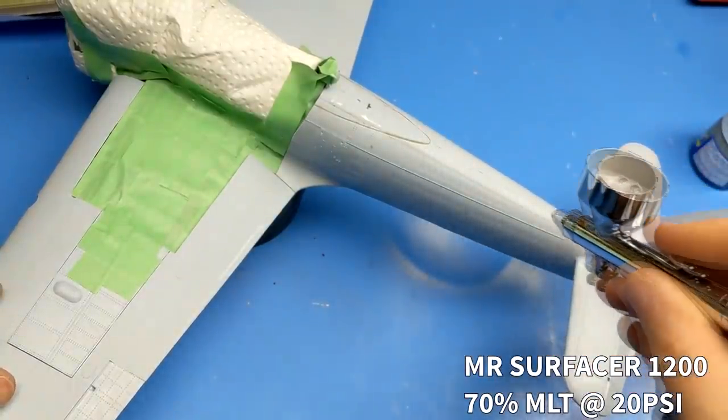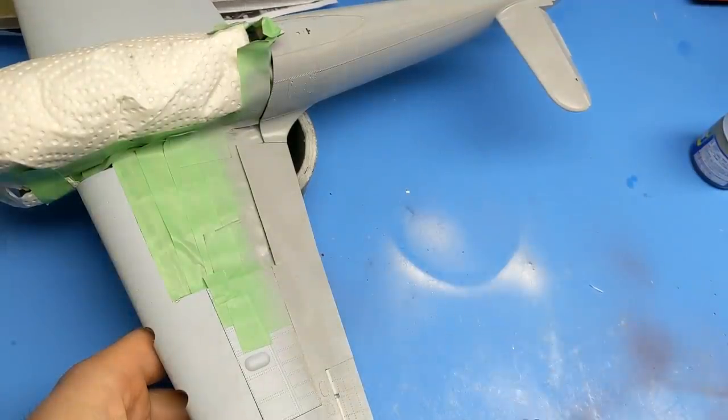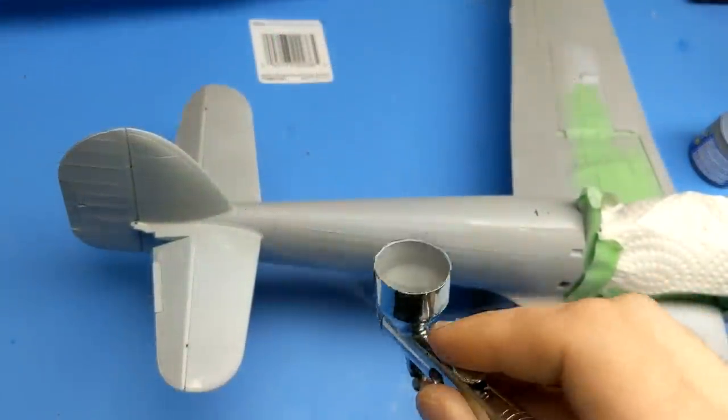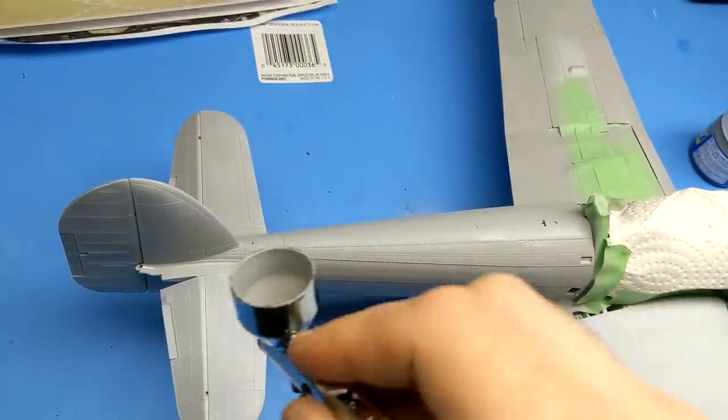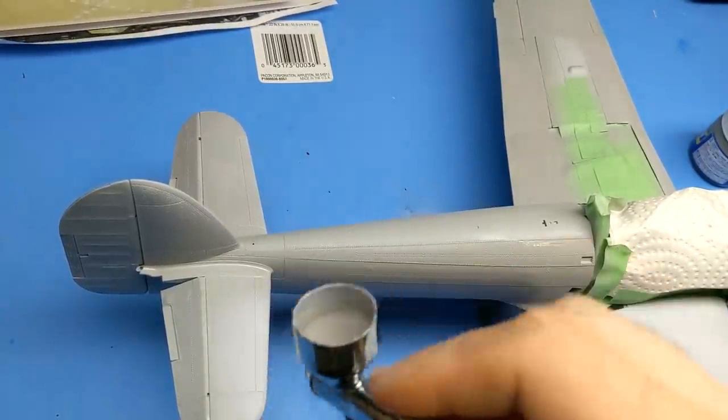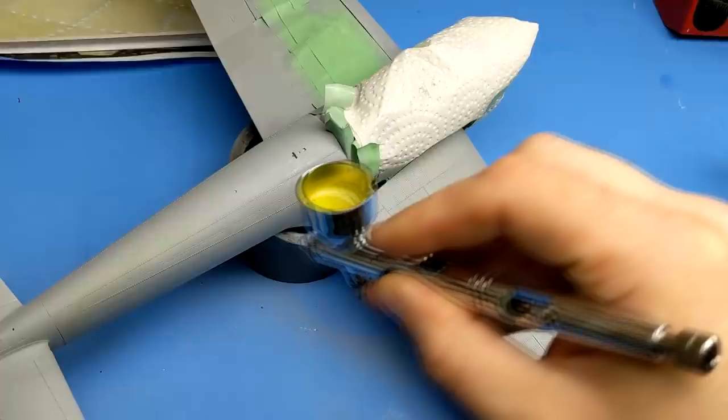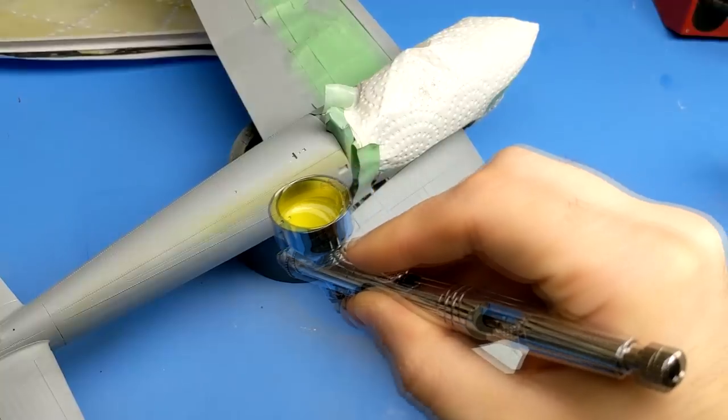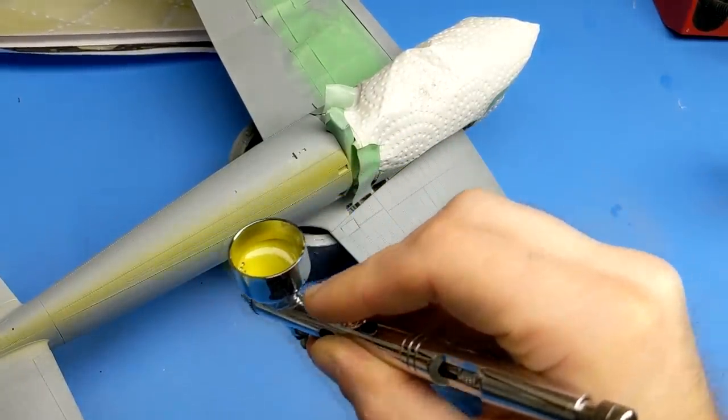Once I've wiped down the entire model with isopropyl alcohol to clean off any fingerprints or dust I'm going to come in and lay down my primer layer. I like to thin my paints out a little bit more than what's considered the norm and the reason I do that is just because I'll do an extra few thin layers to build up a nice smooth paint. Anytime I've had it a little bit thicker it seems I end up with some textures or puddling.